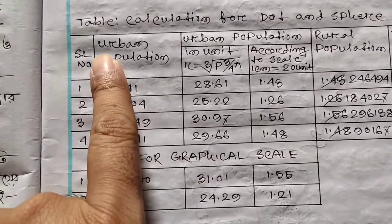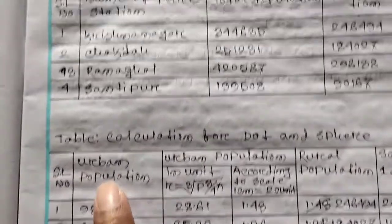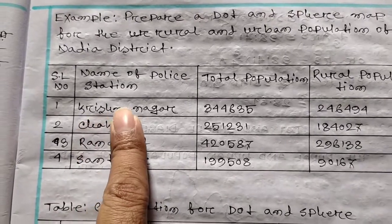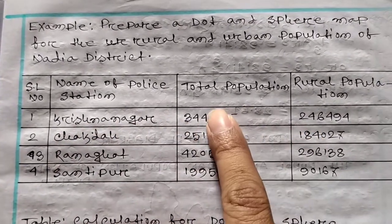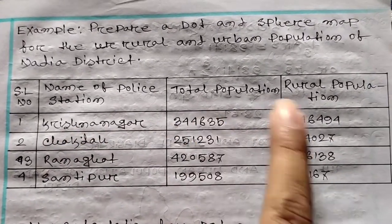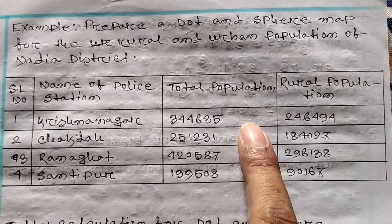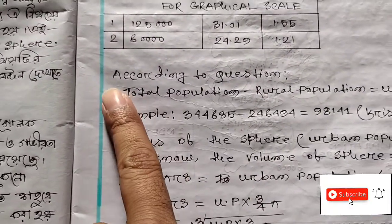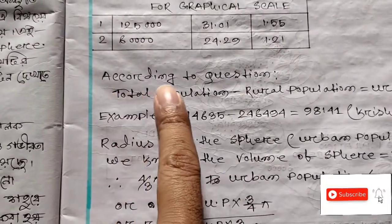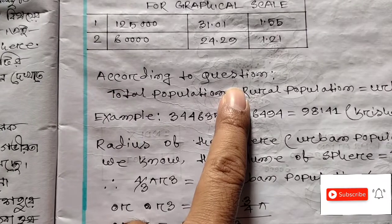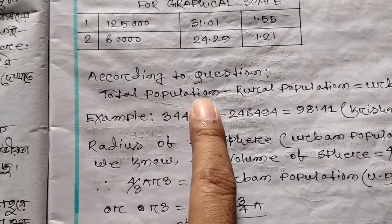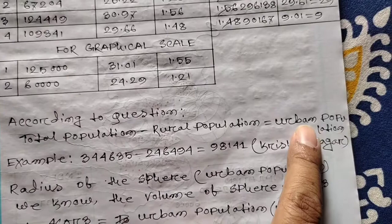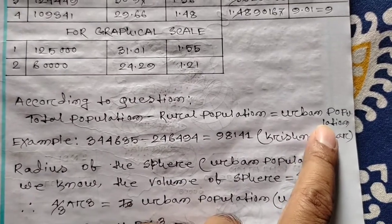I read urban population, but it is not urban population by itself — it means total population minus rural population. So urban population equals total population minus rural population.